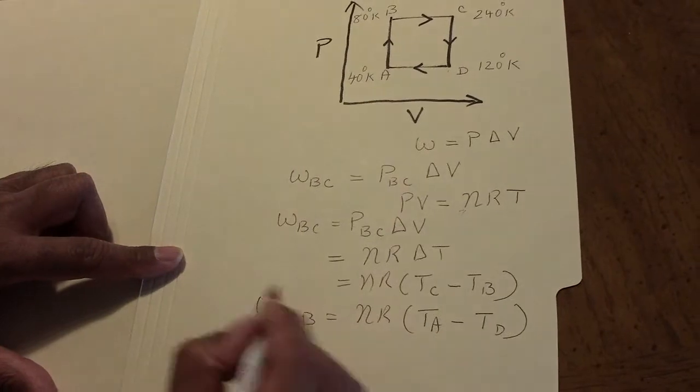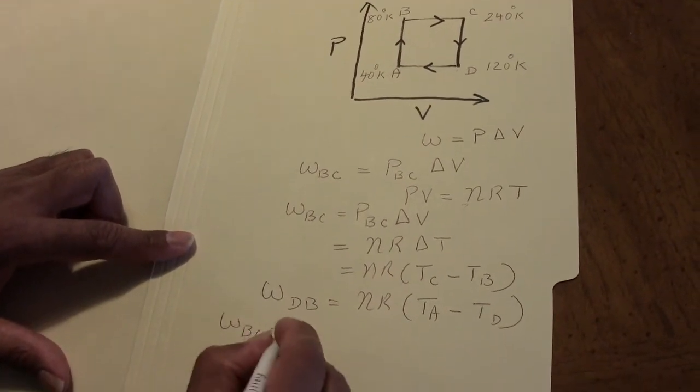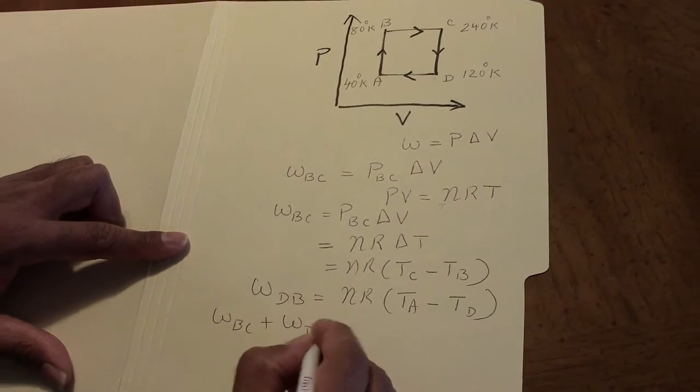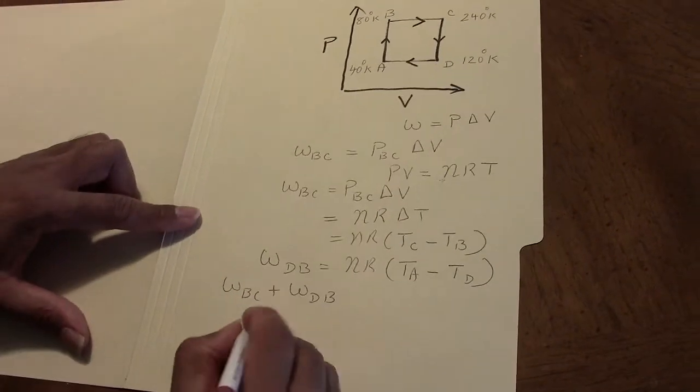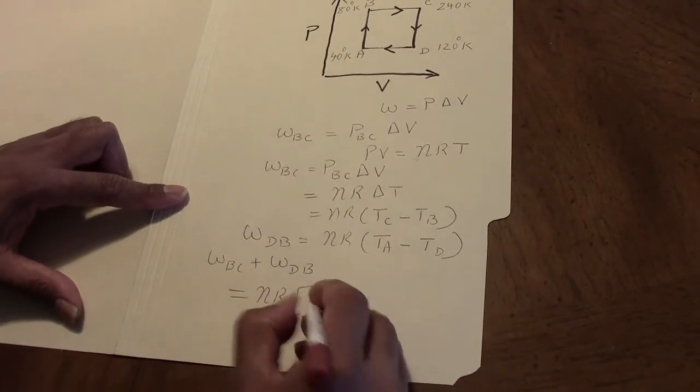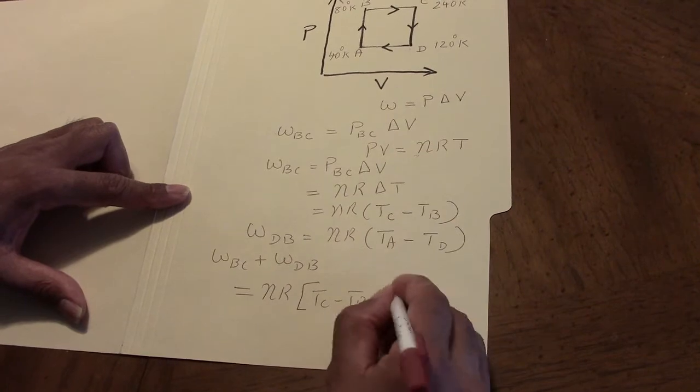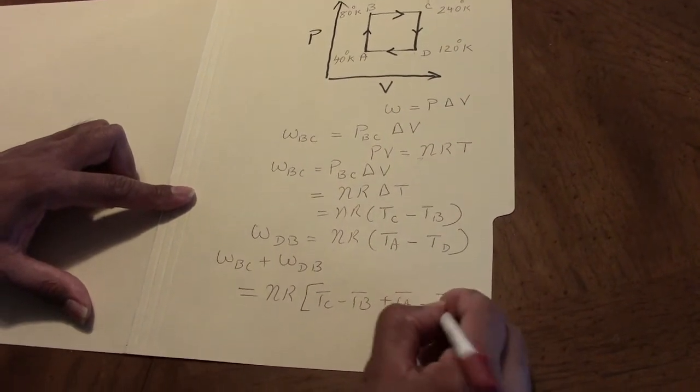Now, the net work done by the gas is WBC plus WDB